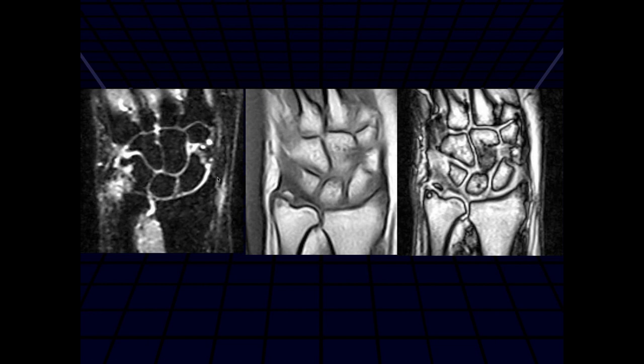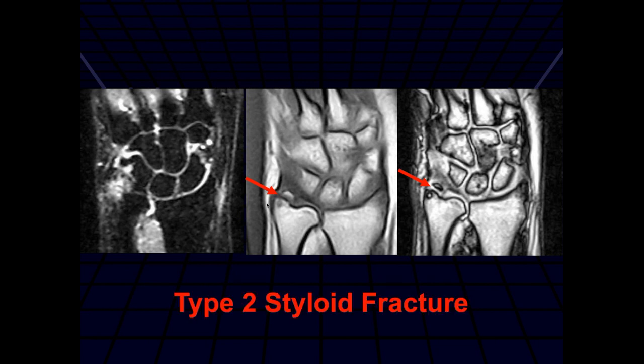Here we can see another fracture of the ulnar styloid process with surrounding marrow edema — this looks more acute than the other case. It looks like it's near the base of the ulnar styloid. I think the lower laminar attachment attaches to that fragment; I don't see the upper attachment well either, so this would probably be unstable. This shows that plain films aren't very reliable for determining stability, because many type 1 fractures on MR show the foveal attachment of the lamina is torn, making them unstable. Almost everyone goes to MR now to help make that determination.